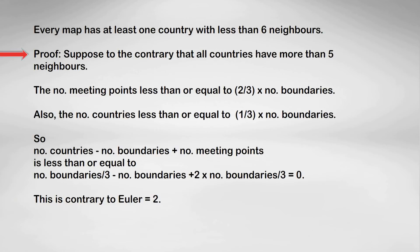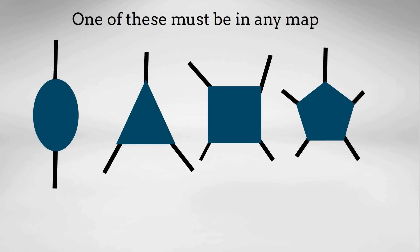So we've made a little bit of progress. We've shown that one of those four country types — diagon, triangle, square, or pentagon — must be in any map, and hence must be in any map that requires more than four colours.